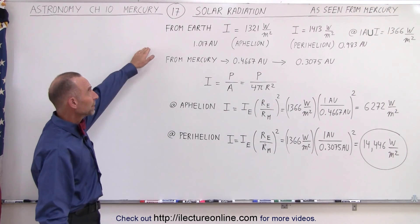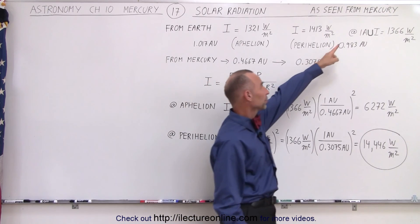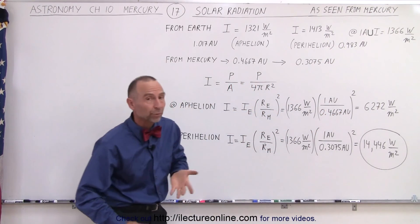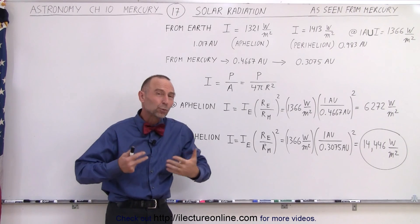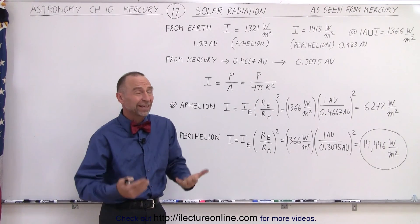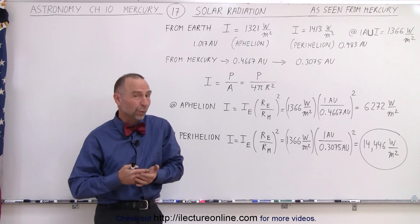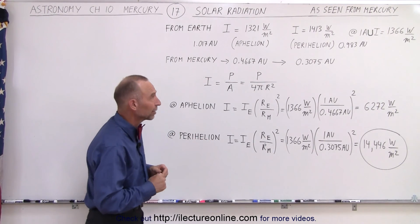On Earth, being an average distance away from the sun of one astronomical unit, the intensity is around 1366 watts per square meter, depending upon which data set you use from which satellite. It's been as high as 1367, as low as 1361. Again, it depends upon which satellite you use.